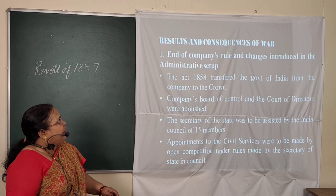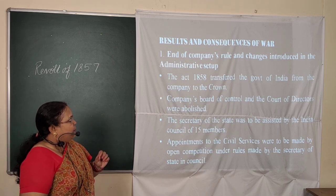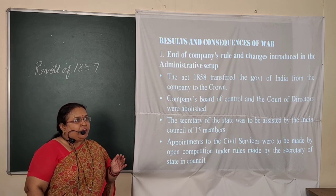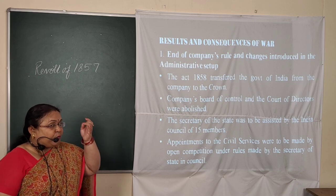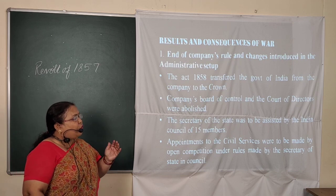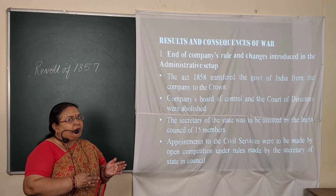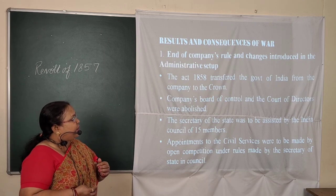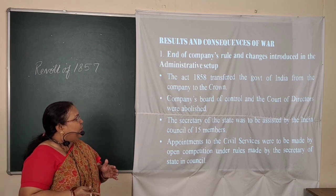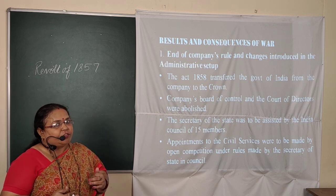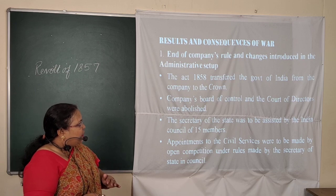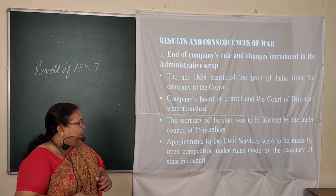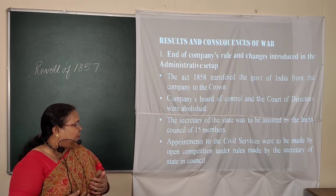The results and consequences of the revolt: end of company's rule and changes in the administrative setup. The British came to India as traders through the East India Company, but after the great revolt, the whole administration passed from the hands of the British company to the British Crown, that is Queen Victoria. The Act of 1858 transferred the government of India from the company to the Crown. The company's Board of Control and Court of Directors were completely abolished, and the Secretary of State was to be assisted by an India Council of 15 members. Appointments to civil services were to be made by open competition.